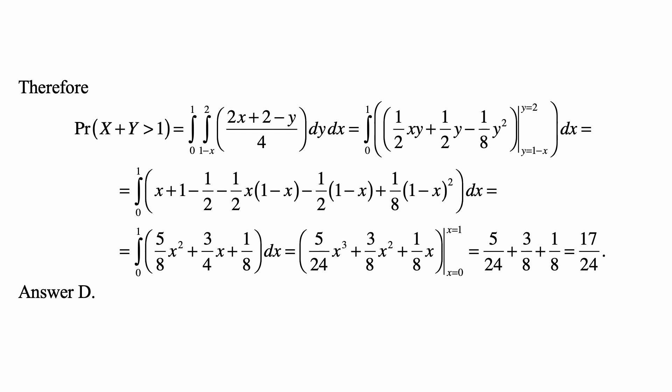At 0, of course, the value is 0, and at 1, we get 5/24 plus 3/8 plus 1/8. The common denominator is 24, and the answer is 17/24, which is answer D.